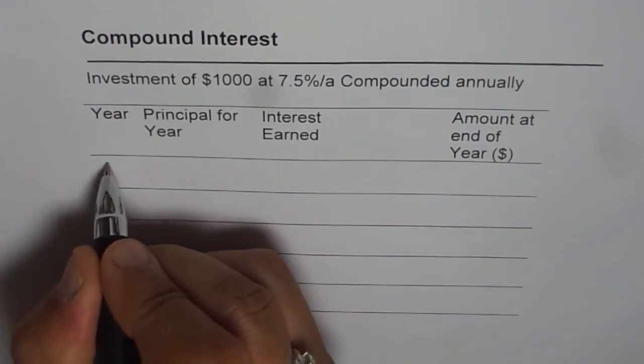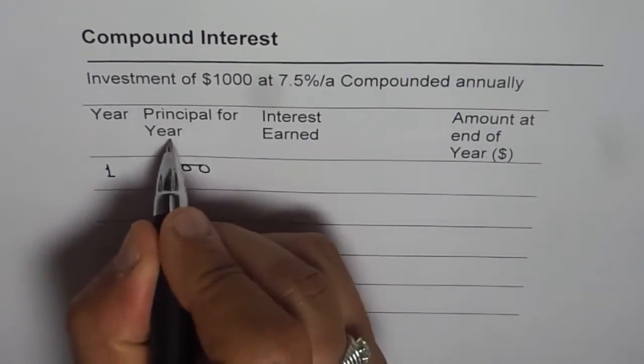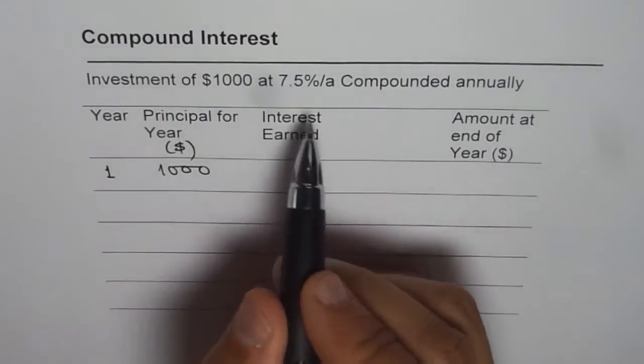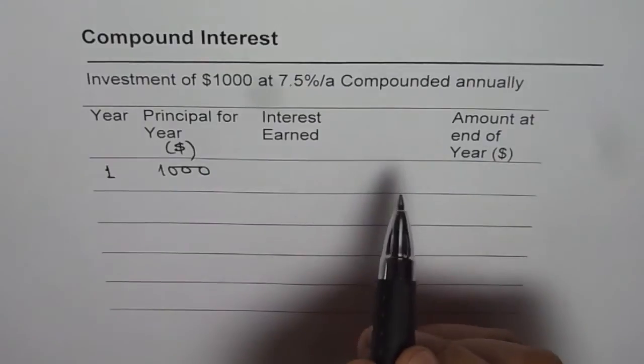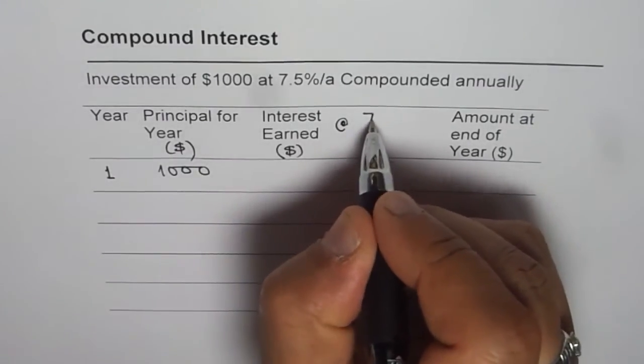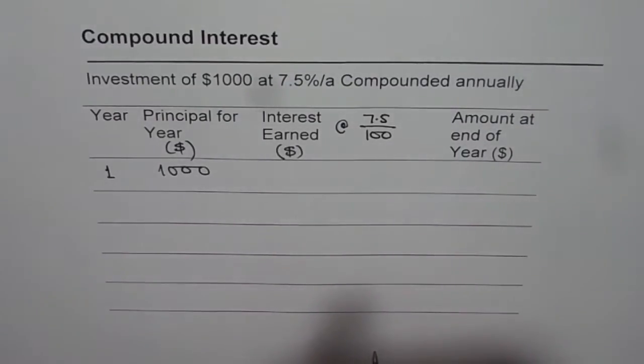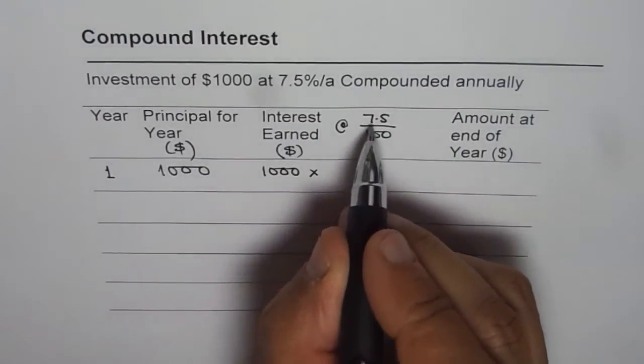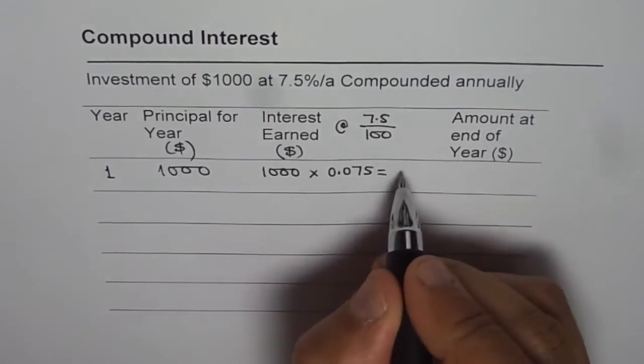At the end of the first year, principal with us is $1,000. Interest earned will be on the principal amount which is invested. The interest rate is 7.5% per annum compounded annually. Once every year at the end of the year, interest earned will be in dollars and the rate is 7.5 divided by 100, which is 0.075. On $1,000, the interest will be 1,000 times 0.075, which is $75.